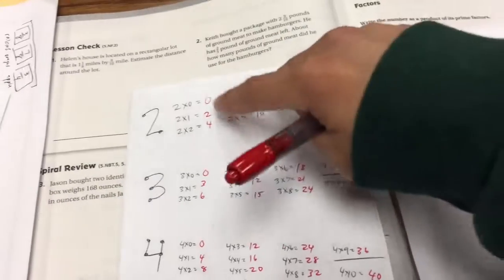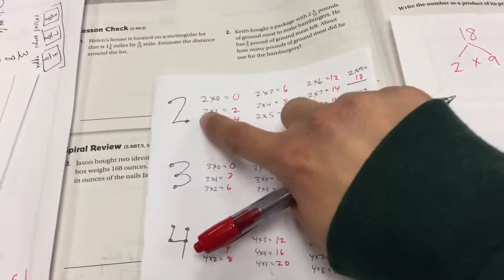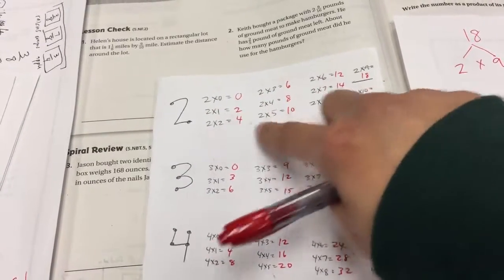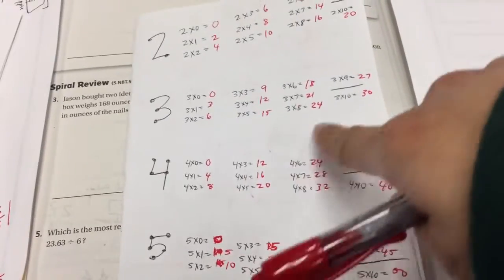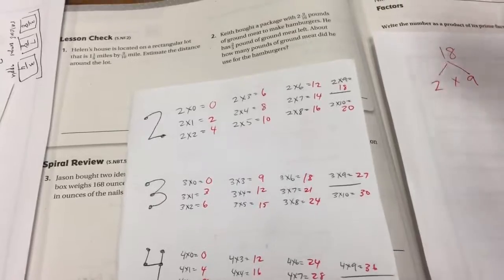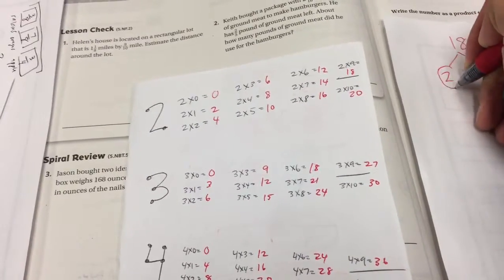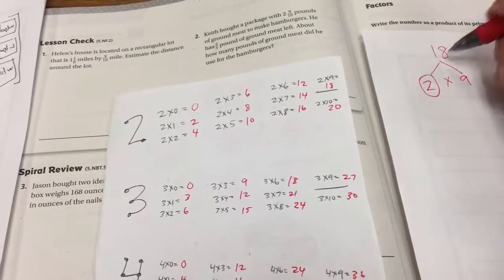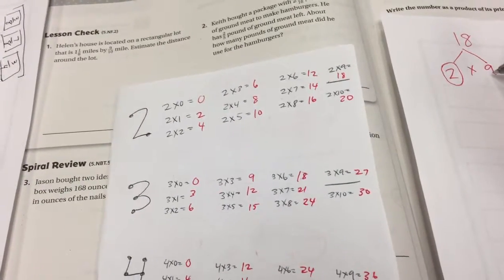So 2 times 9 gets to 18. Are there any 2s that are in the reds other than 2 times 1? So here I find a 2, but it's 2 times 1. So that doesn't really count. And I'm looking through, and I don't see any 2s. And what that means is that 2 is a prime factor. The only way to get to 2 is using 2 times 1. Therefore, I'm going to circle it because it is a prime factor.